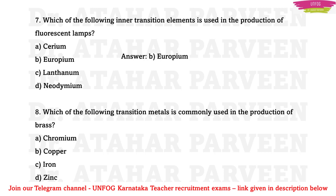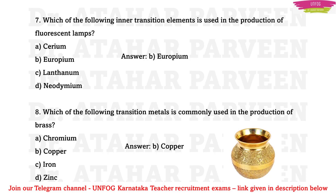MCQ 8: Which transition metal is commonly used in the production of brass? Brass has a copper color — somewhat golden-looking. Copper is used to make brass items. Brass utensils have that characteristic copper-golden color, as you can see from the diagram shown. So copper is the correct answer for the production of brass.